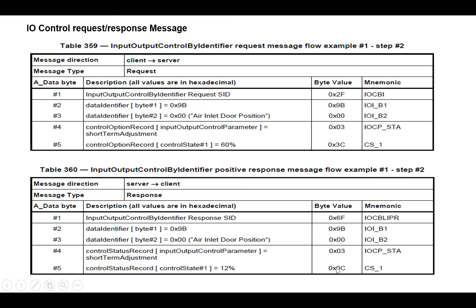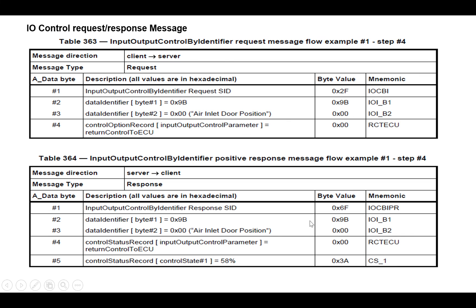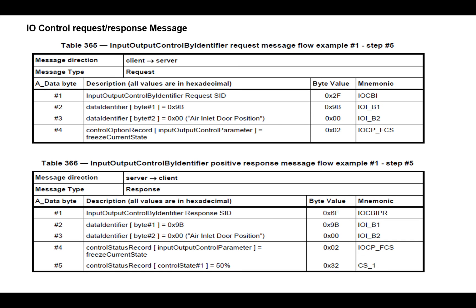For Return Control to ECU, only the sub-function changes to 0x00. The response is 0x6F, followed by 0x9B00 (DID), sub-function 0x00, and the current status record value, for example 0x58 at that moment.